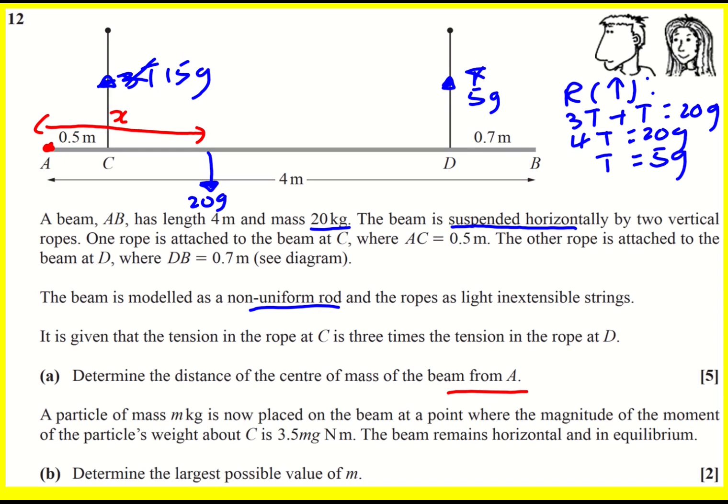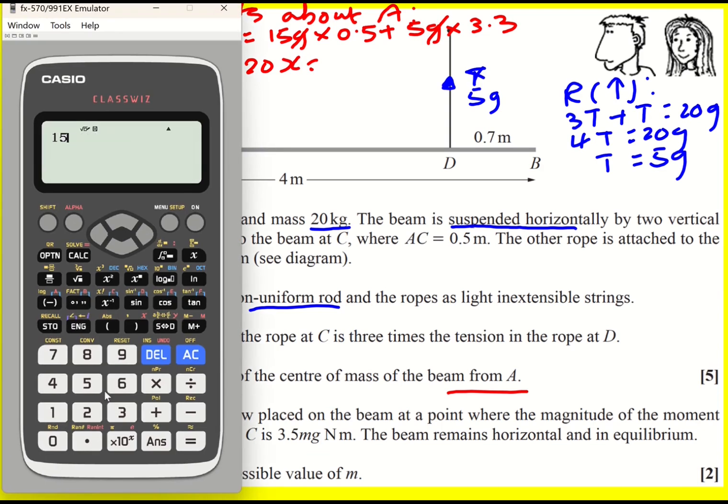So clockwise moments. Well that's just coming from the weight. So take moments at A. Clockwise moment is going to be 20g times x. And then that's going to equal the anticlockwise moments. So we've got 15g times 0.5 plus 5g times... Now if the whole thing's 4 and that bit's 0.7 then it's going to be 3.3. But I can just cancel the g's out at this point because they're everywhere.